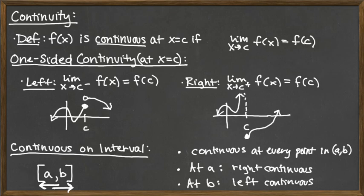Keep in mind what the interval looks like to get your left and right straight: the left-hand endpoint a needs the function to be right-continuous, and the right-hand endpoint b needs it to be left-continuous. Everywhere else in the middle, it just needs to be continuous in general to say that the function is continuous on a closed interval.